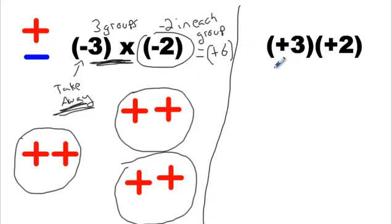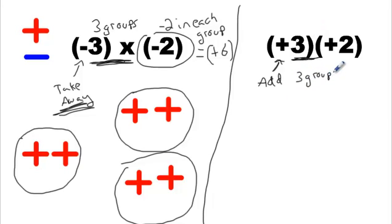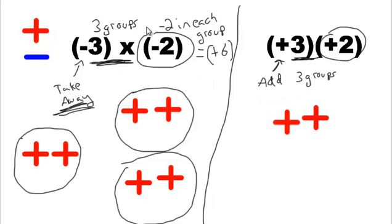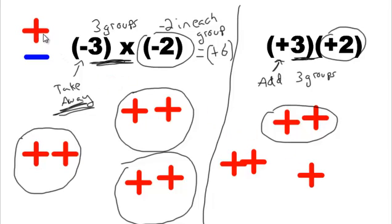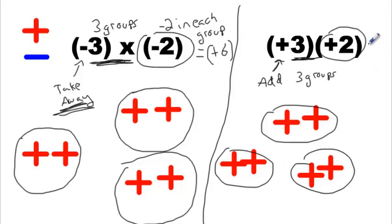Let's move on to this one. This one says add — the mathematician forgot his symbol again, that's okay. We got three groups, and there has to be positive two inside of each one. We don't need to make groups of nothing anymore — we just got to add what they asked us to add. We'll add a group of two. Here's a group of positive two — circle it. We got to add three groups, so here's my second group of positive two, and here's my third group of positive two. You see how this is no different than just saying three times two? I get positive six again.